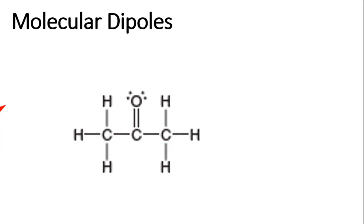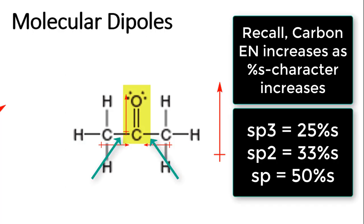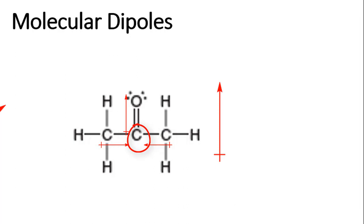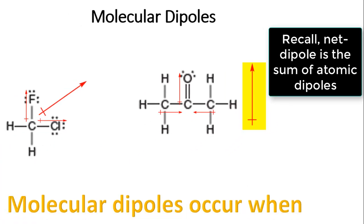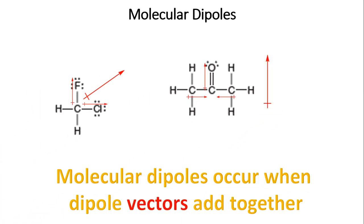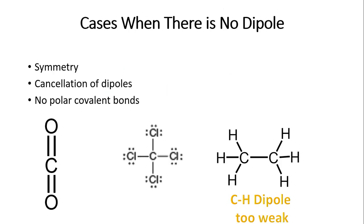Take acetone as an example. The C=O bond is polarized, and so are the C–C bonds, because the carbonyl carbon is sp2 hybridized and more electronegative than the sp3 methyl carbons. The sp2 carbon induces polarization of the C–C bonds toward itself. Combined with the C=O dipole, these individual dipoles sum as vectors to give an overall net molecular dipole, shown by the arrow here.